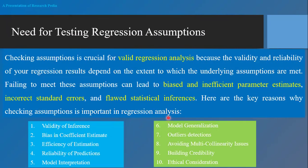Why do we need to test regression assumptions? Checking assumptions is crucial for valid regression analysis because the validity and reliability of your results depends on the extent to which the underlying assumptions are met. Failing to meet these assumptions can lead to bias and inefficient parameter estimates, incorrect standard errors, and flawed statistical inferences. Key reasons include: validity of inference, bias in coefficient estimates, efficiency of estimates, reliability of prediction, model interpretation, model generalization, outlier detection, avoiding multicollinearity issues, and credibility.